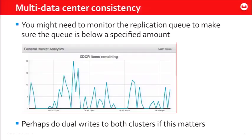For multi data center consistency, when you're using XDCR you really need to monitor the replication queues to see what's happening — there's a number of items remaining to be replicated that you want to watch on a regular basis. Some people do dual writes to different data centers. It really just depends on what you're trying to do.